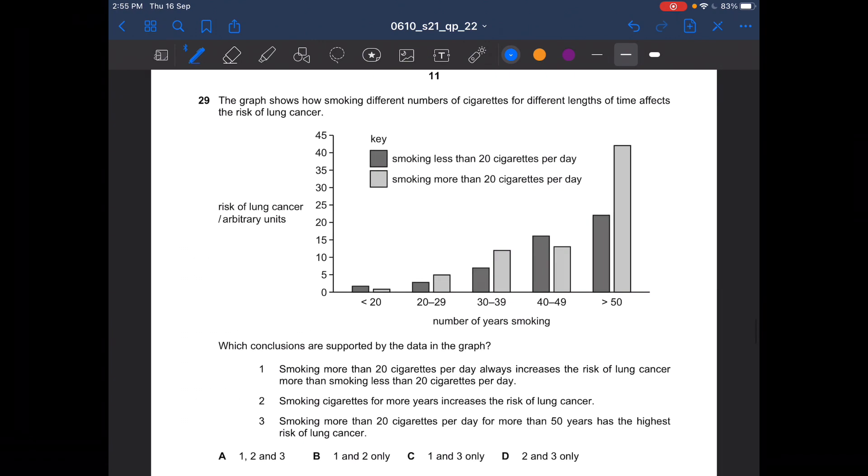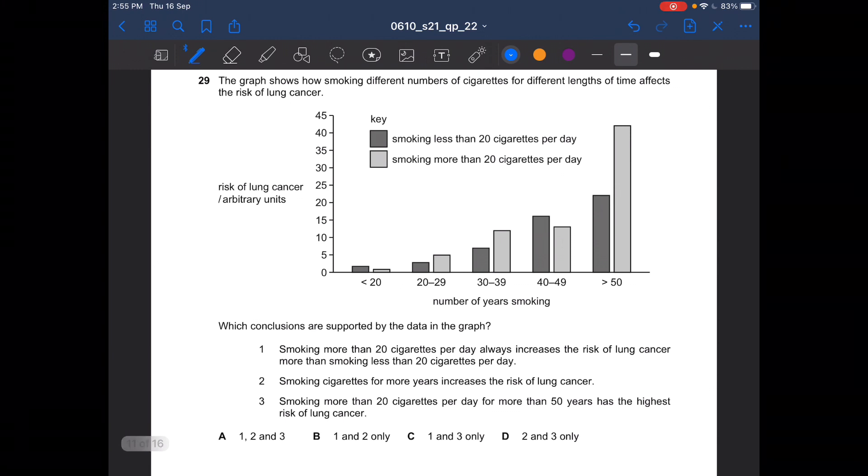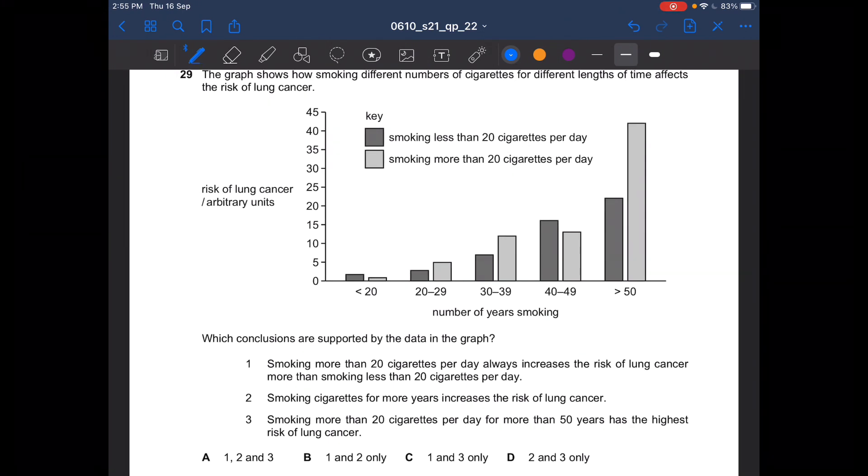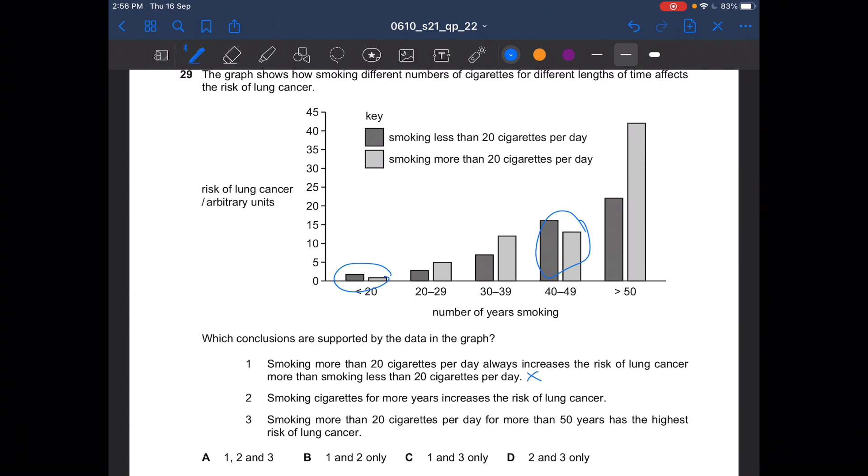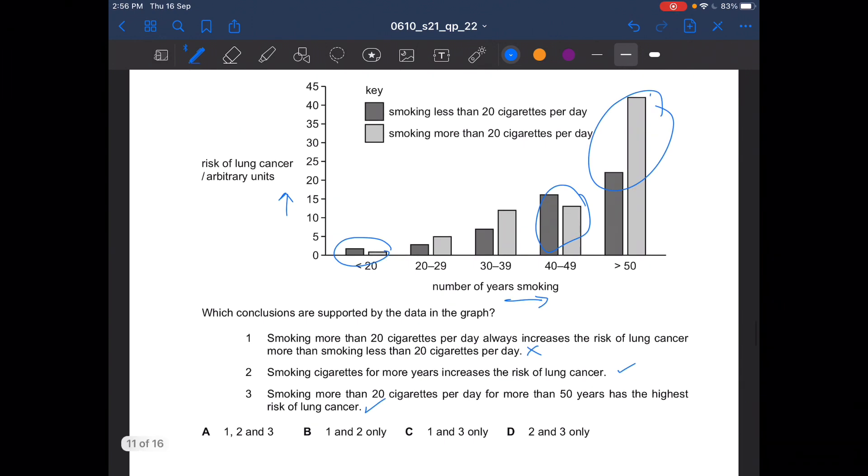The graph shows how smoking different numbers of cigarettes for different lengths of time affects the risk of lung cancer. Which conclusions are supported by the data in the graph? Smoking more than 20 cigarettes per day always increases the risk of lung cancer more than smoking less than 20 cigarettes per day. This is not true for this and this. So one is incorrect. Smoking cigarettes for more years increases the risk of lung cancer. That is correct. As you can see, as the number of years increases, the risk of lung cancer increases. Smoking more than 20 cigarettes per day for more than 50 years has the highest risk of lung cancer. That is correct. It is the highest. So the answer is 2 and 3 which is D.